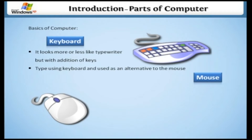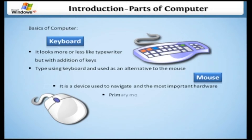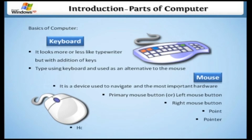Mouse. When you hear this, you might feel funny about having it near your computer. It is a device used to navigate and the most important hardware. The parts of the mouse are the primary mouse button, or left mouse button, the right mouse button, point, and pointer. If you hover or move the mouse, the pointer on the screen moves.